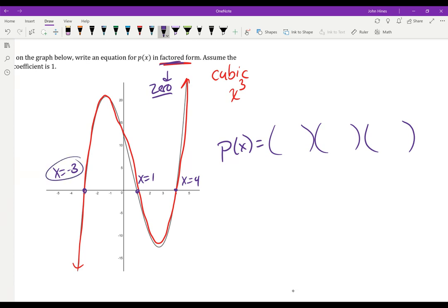So if I get negative 3 as a 0, x plus 3 had to be a factor. If I get x equals 1, x minus 1 had to be a factor. And if x equals 4, x minus 4 has to be a factor. So that's my polynomial right there.